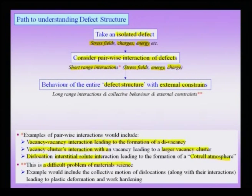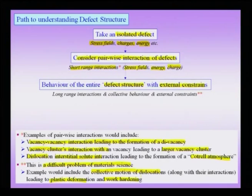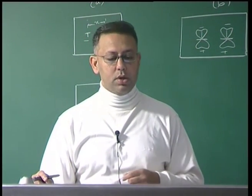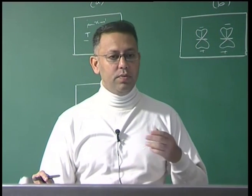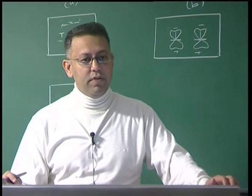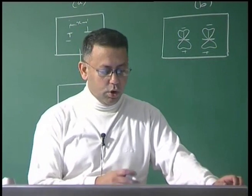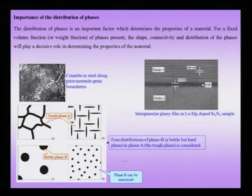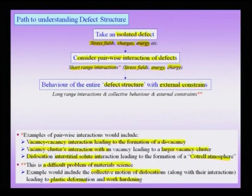This consideration of multiple defects, their interactions, and their evolution is one of the difficult problems in materials science. When talking about the collective motion of dislocations leading to plastic deformation and work hardening, we need to consider millions and billions of dislocations in complex structures like cell walls or along grain boundaries, interacting with other defects. This problem becomes even more complicated for multi-phase materials.